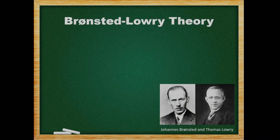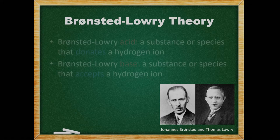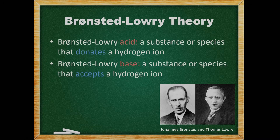The problem with the Arrhenius definition is that some substances which acted like acids and bases could not be classified using it. Chemists Johan Bronsted and Thomas Lowry suggested a broader definition of acids and bases. A Bronsted-Lowry acid is a substance or species that donates a hydrogen ion, and a Bronsted-Lowry base is a substance or species that accepts a hydrogen ion.